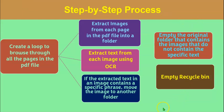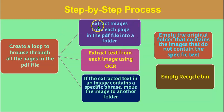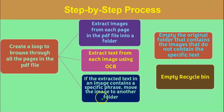This is the step-by-step process to extract images that meet a particular criteria. Create a loop to browse through all the pages in the PDF file. Within the loop, we create three actions: first, extract images from each page into a folder; then, extract text from each image using OCR; if the extracted text contains a specific phrase — in our case, 'log sheet' — move the image to another folder. This completes the actions within the loop.